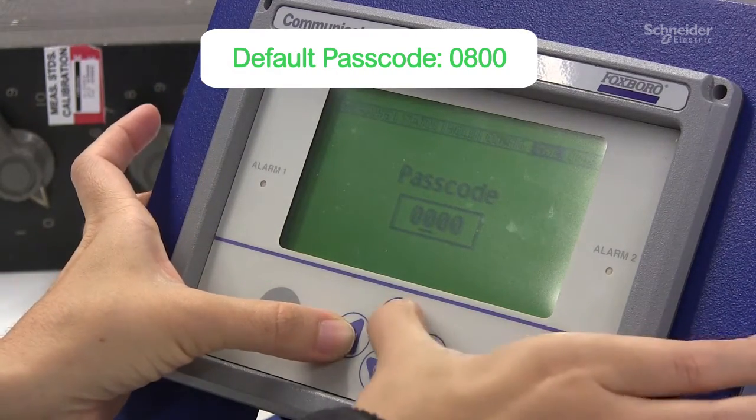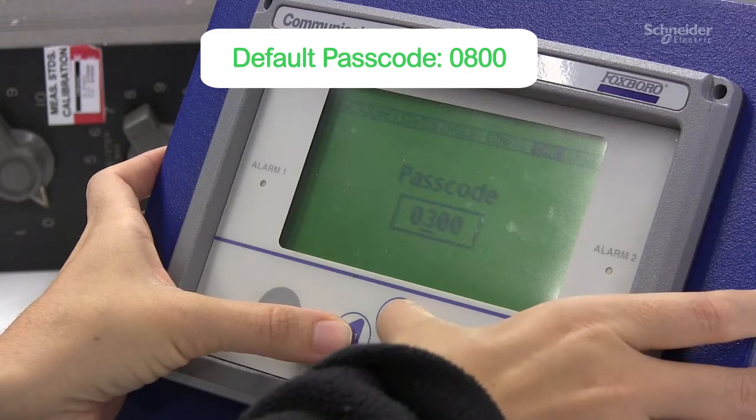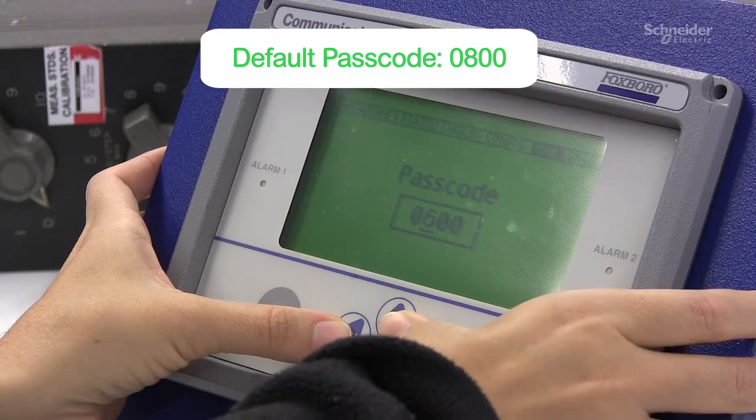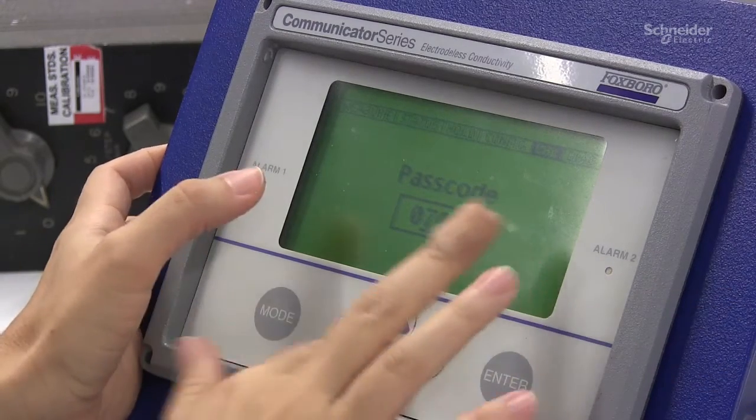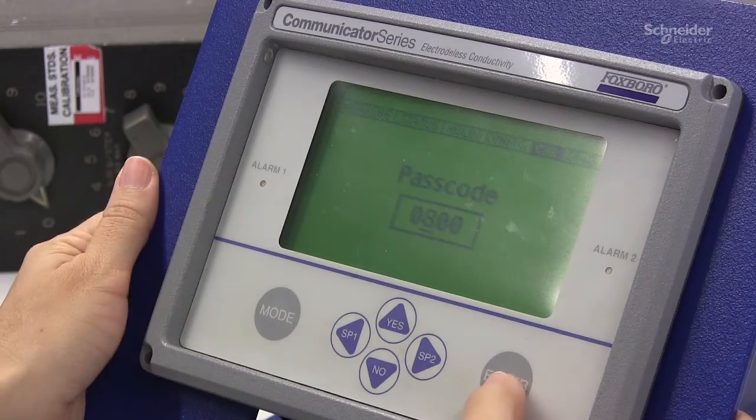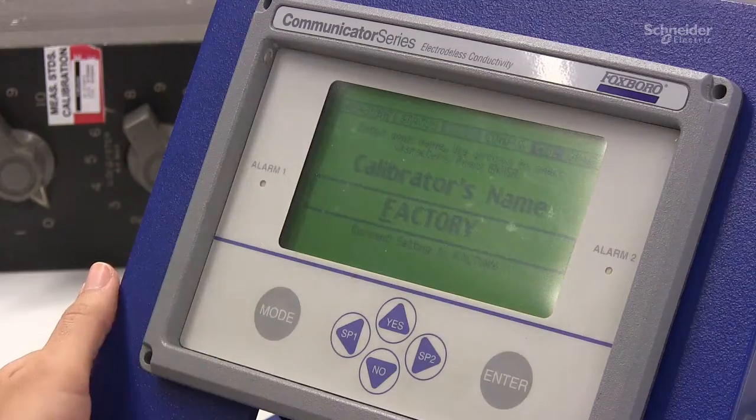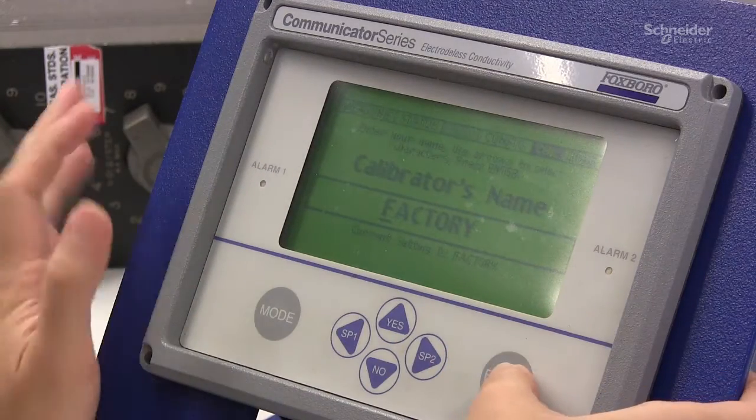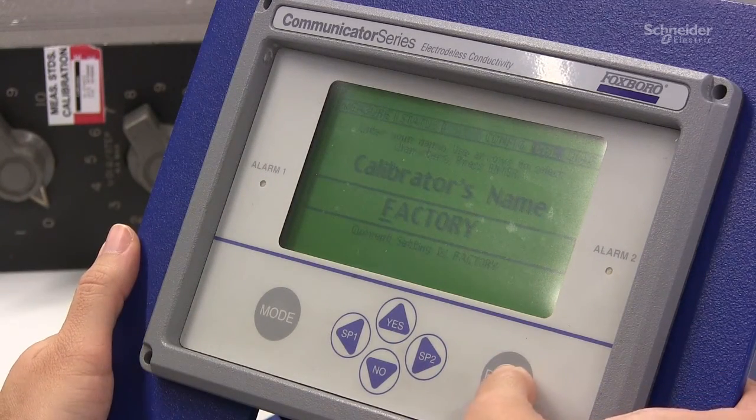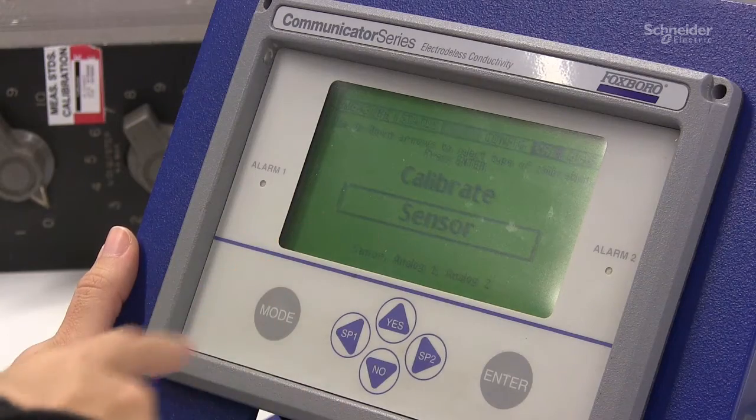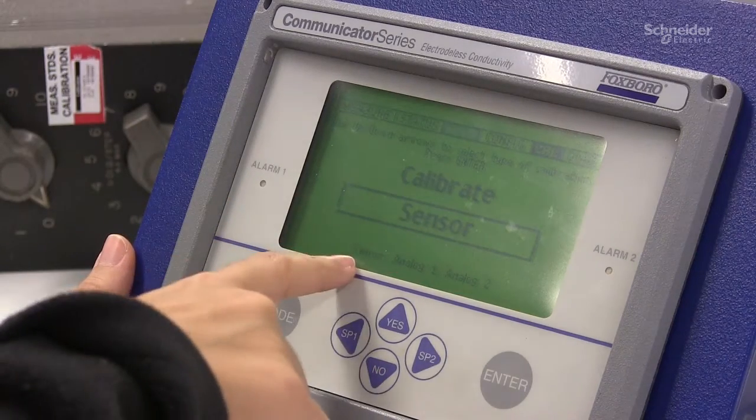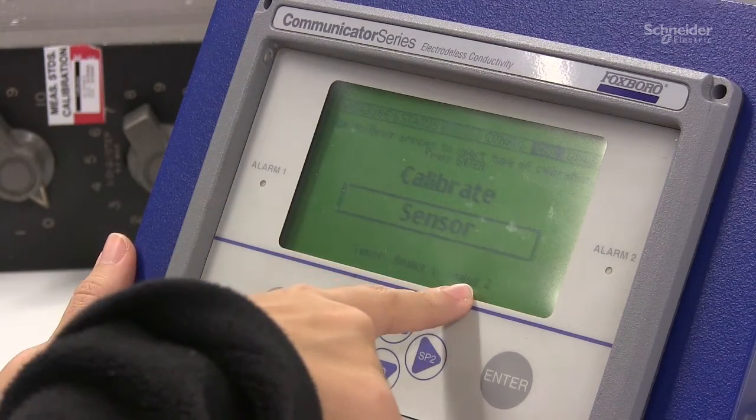The default is 0800, enter it. It's going to ask the calibrator's name, I'm not going to change that so enter. And now it says calibrate sensor and it will show you below all the possible options for calibration.